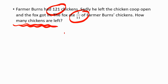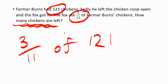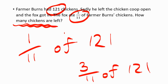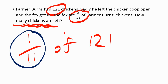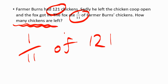The first thing to do is probably find out what 3 elevenths of 121 is — that's how many chickens have been eaten. So how do we find 3 elevenths of 121? You don't just go straight to 3 elevenths — you make it easier. Find 1 eleventh of 121 first, because that's easy. Then after that, we can find 3 elevenths by multiplying the answer by 3. So 1 eleventh of 121 is like saying 121 divided by 11.